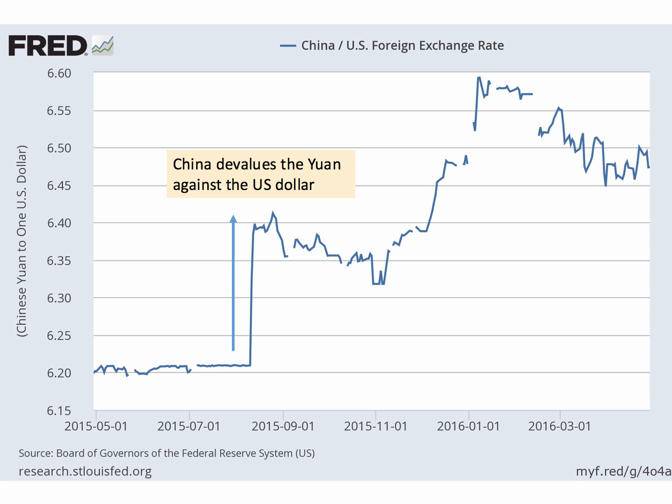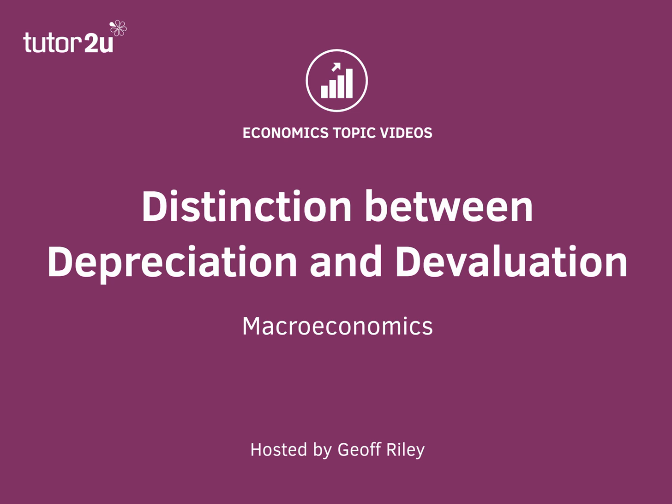In August 2015 the yuan renminbi to dollar exchange rate fell from 6.20 to 6.40. In other words, one dollar previously would have bought 6 yuan 20; now it buys 6 yuan 40. The dollar has appreciated — it's been revalued against the yuan. The yuan has been devalued against the US dollar. That's the difference between a depreciation and a devaluation.